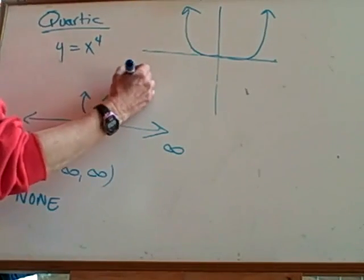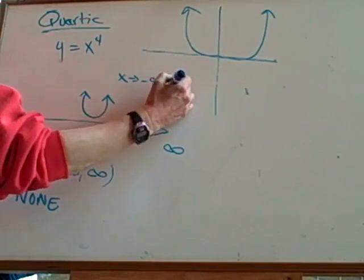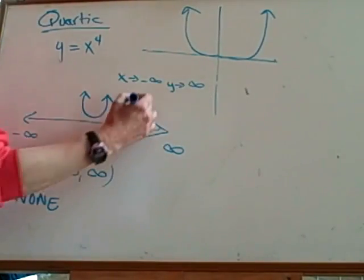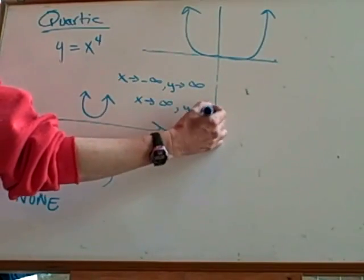End behavior. As x approaches negative infinity, that means as x goes this way, what's y doing? Going up. So y approaches infinity, positive infinity. As x approaches positive infinity, what is y doing? Positive infinity.